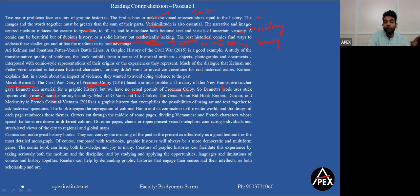Michael G Mann and Liz Chake Clark's The Great Hanoi Rat Hunt: Empire Disease in Modernity in French Colonial Vietnam is a graphic history that exemplifies the possibilities of using art and text together to ask historical questions. So this comes out as an example, a good book to show how art and text can go together. Now what does this book do? The book engages the segregation - segregation means separation - of colonial Hanoi and its connection to the wider world, and the design of each page reinforces these themes. Basically all the pages somehow bring that art or visual experience that you know, colonial Hanoi has been segregated, has been separated. Gutters cut through the middle of some pages.